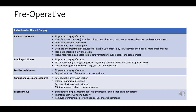Other pulmonary indications include traumatic thoracic injury evaluation and tissue resection methods like decortication, empyectomy, removal of bullae, blebs, and granulomas. Esophageal disease indications include biopsy and staging of cancer, with procedures like vagotomy, helermyotomy, Zenker diverticulum treatment, and esophagectomy. Gastroesophageal reflux disease may be managed with a Nissen fundoplication.